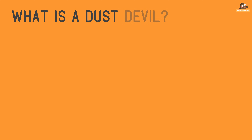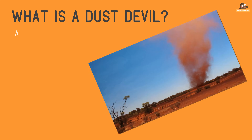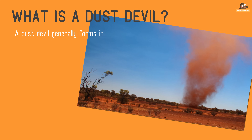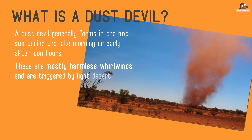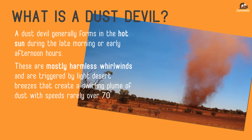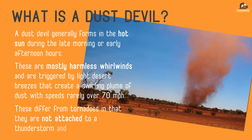What is a dust devil? A dust devil generally forms in the hot sun during the late morning or early afternoon hours. These are mostly harmless whirlwinds triggered by light desert breezes. They create a swirling plume of dust with speeds rarely over 70 miles an hour. They differ from tornadoes in that they are not attached to a thunderstorm or any cloud, and are usually very weak.